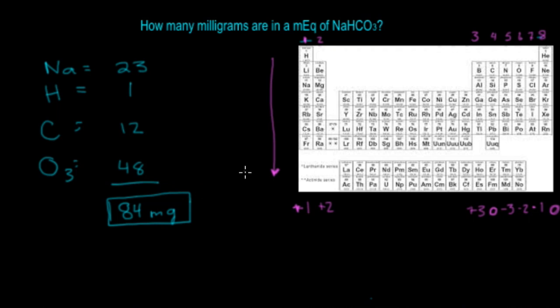You're going to want to find the elements that you have on the left, and find what charge they have on the right. Sodium is in group 1, so that has a plus 1 charge. Hydrogen is also there, so that's also a plus 1 charge.